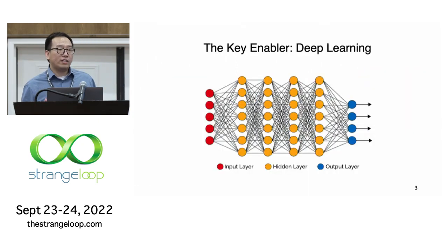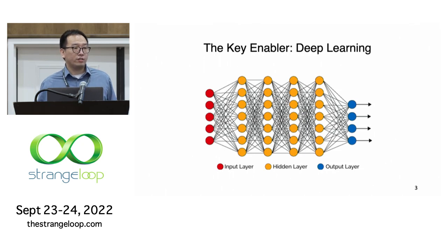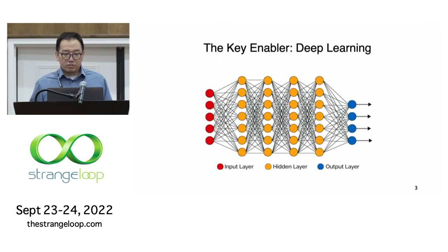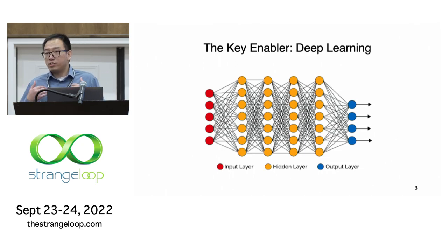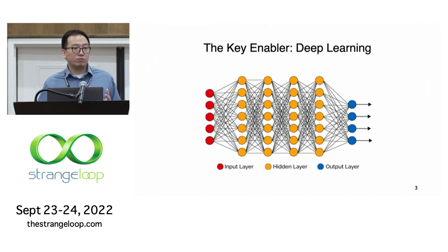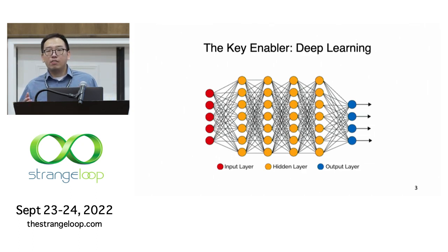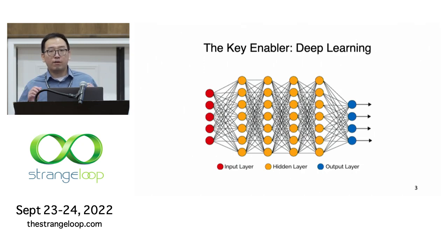Deep learning is quite different from traditional software engineering. In traditional software development, programmers manually write the program logic in source code, but in deep learning, the models actually learn their own logic from the training data.